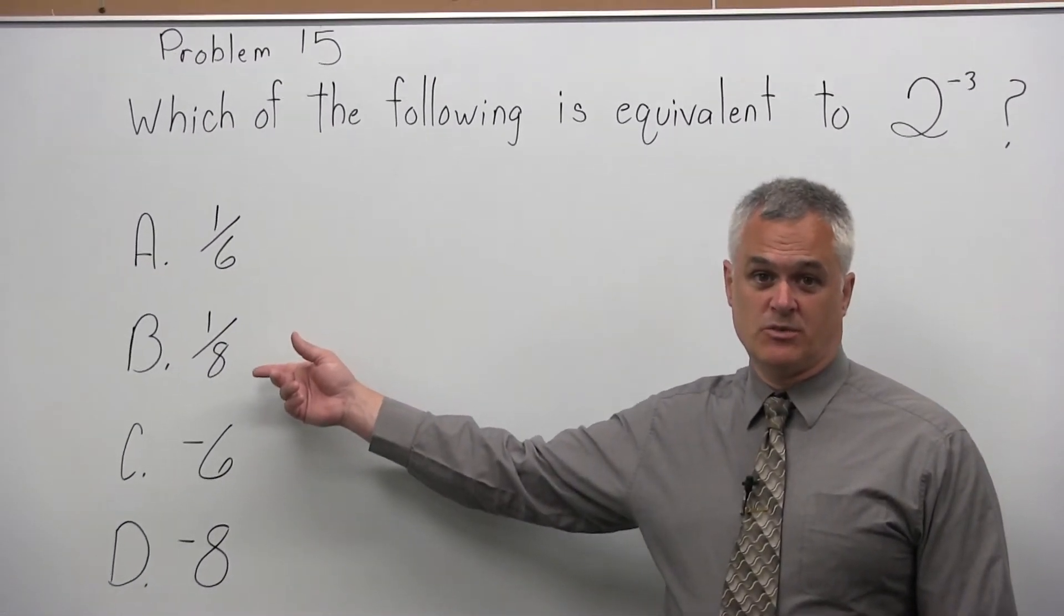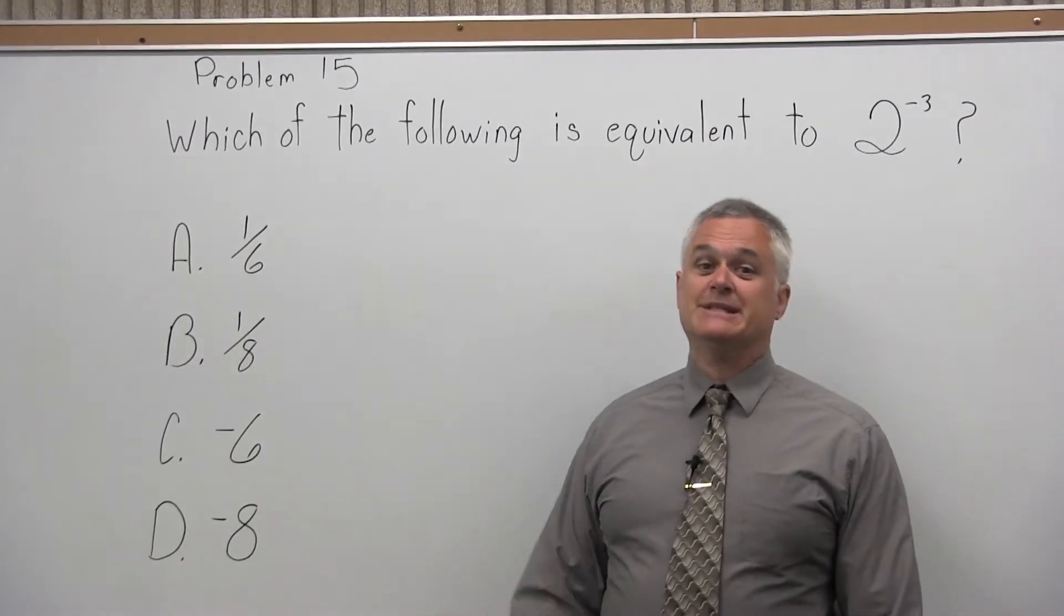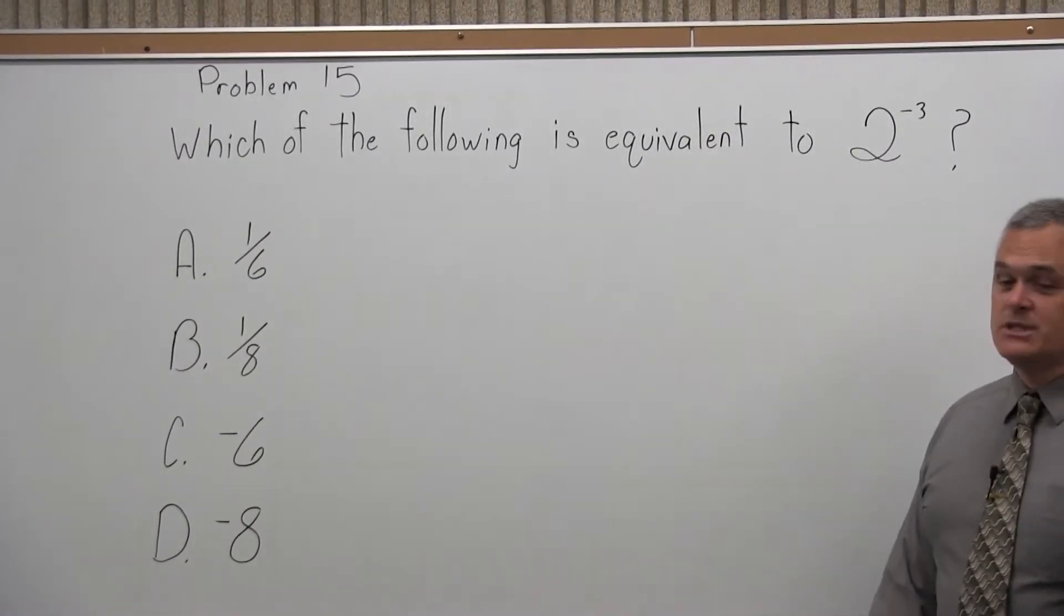Option A is 1 over 6, Option B is 1 over 8, Option C is negative 6, and Option D is negative 8. So one of those is the answer.